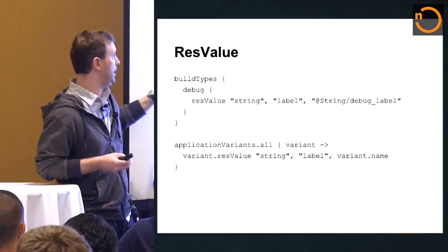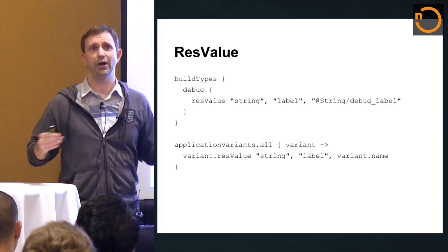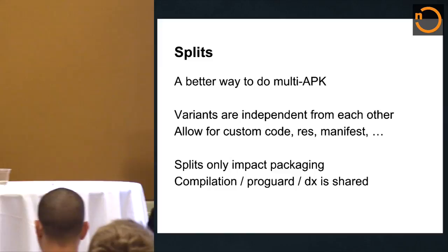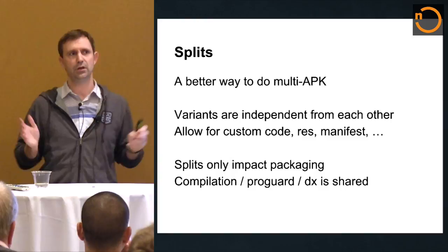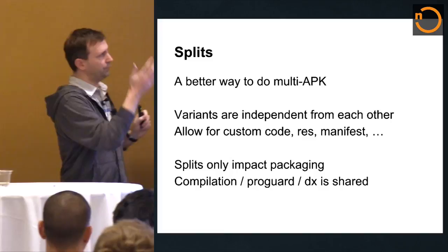We also have resValue, which is similar to BuildConfig fields but creates actual Android resources instead. We used to have that on debug, and now we also have it on application variants. Since those are at the variant level, they are high priority and will override anything else you have. The old approach of using flavors to do packaging — ARM versus x86 — is deprecated in favor of splits.